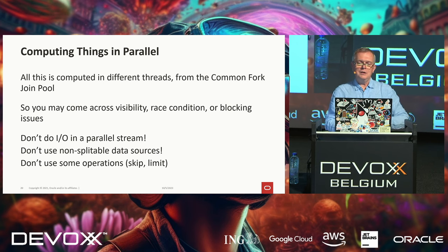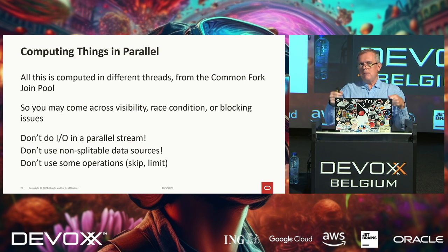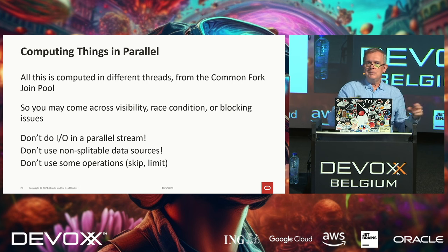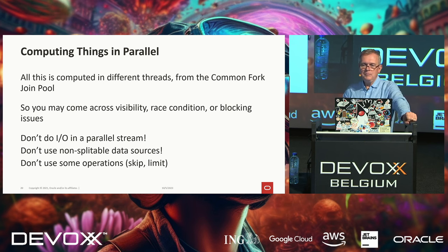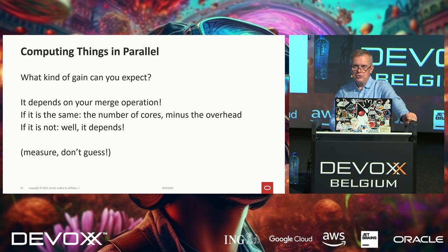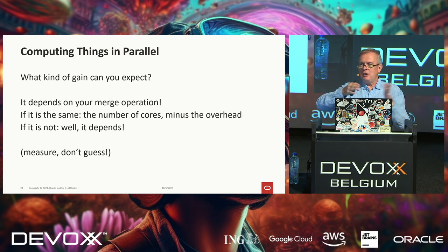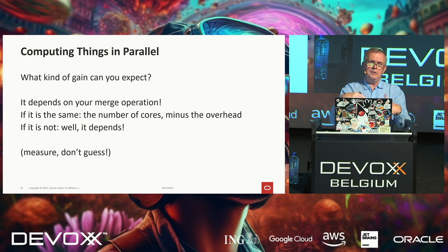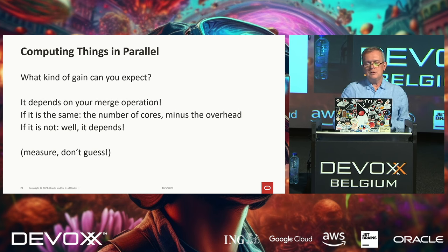Using parallel streams in the right way is actually quite hard. You should definitely measure the performances — not of your individual computation, but the performance of your whole application using parallel computation versus not using it, because odds are that not doing parallel computation would be better for your server. What kind of gain can you expect? If you have 8 or 12 cores and things go well, you can expect something like 12 minus the overhead of splitting and distributing — maybe a factor of 10.